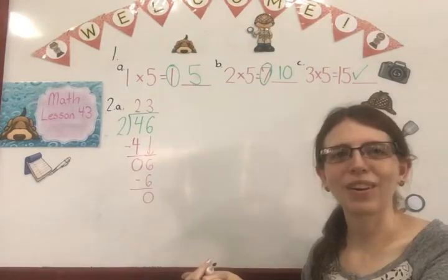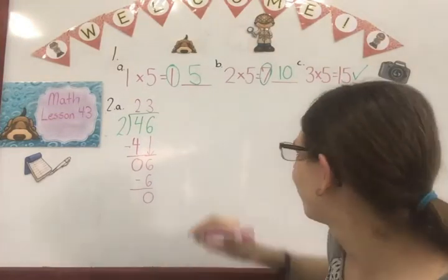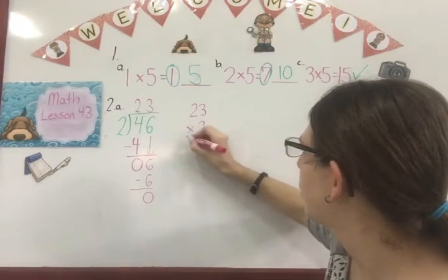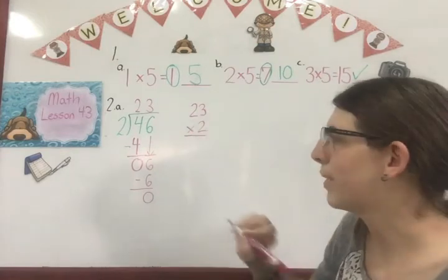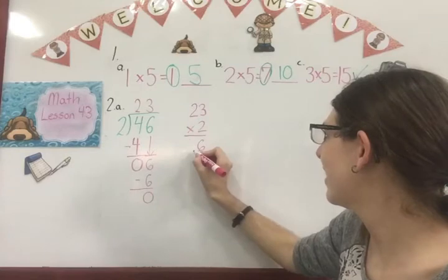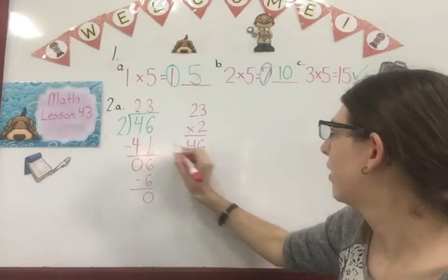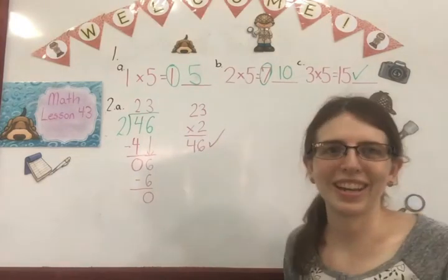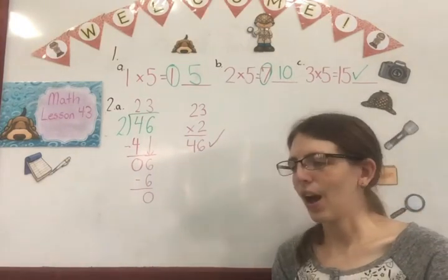So that's our answer. Let's check it. 23 times 2. 3 times 2 is 6. 2 times 2 is 4. 46 and 46. Do they match? Yes, they do. So our answer is correct. Okay. So you're going to do B and C now by yourself.